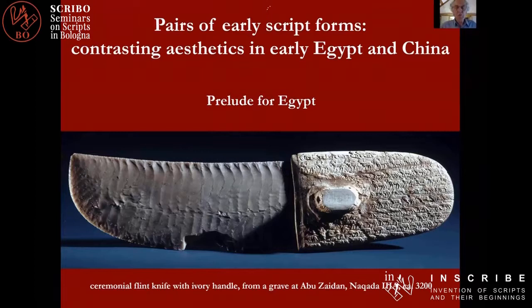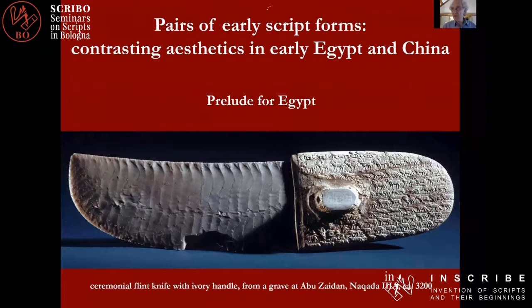In talking about the origins of writing, it's important to think about the aesthetic environment from which writing emerged, and that's what I'm going to try to do. I'm starting both halves of the lecture with examples from before writing is known — not many centuries before, but what the environment was before writing appeared. And then I shall go a long way down in time and consider complex uses later on, where I see a parallel between Egypt and China, and in that case the aesthetic component remains important.